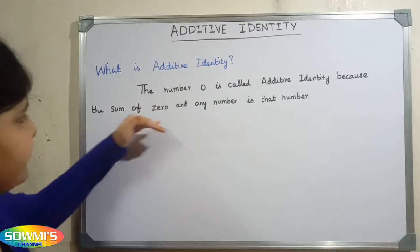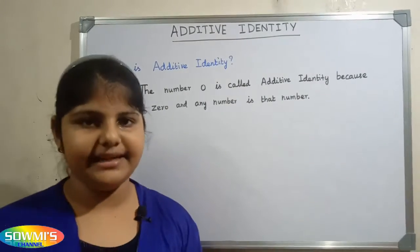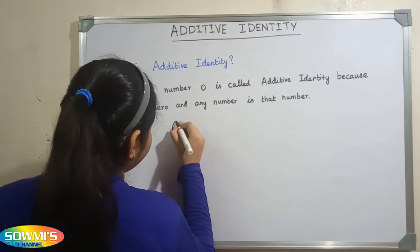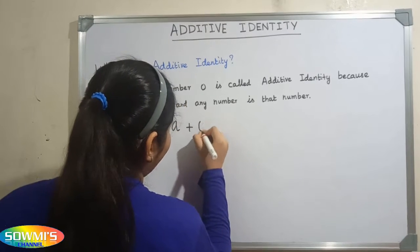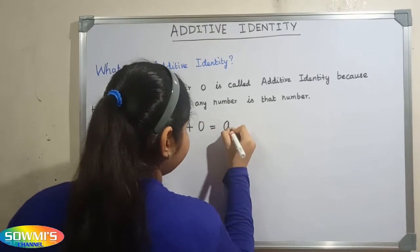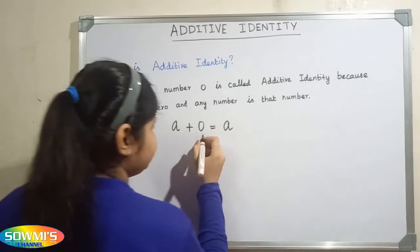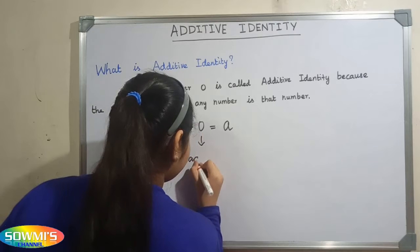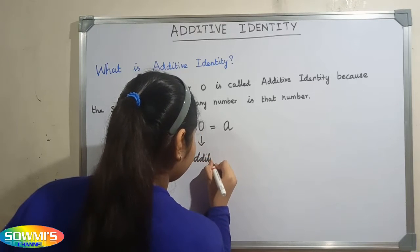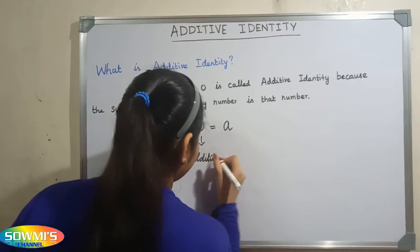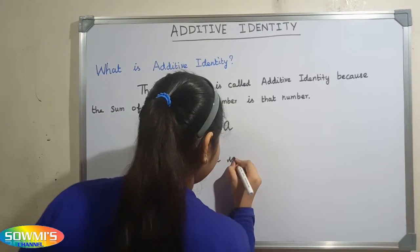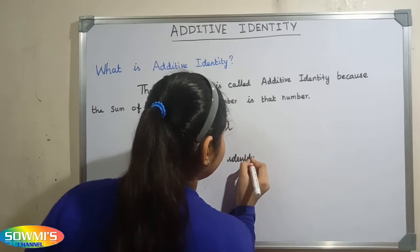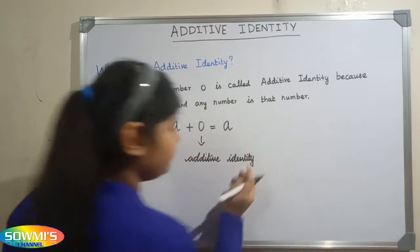Because the sum of zero and any number is that number. You can take a plus zero is equal to a. Here zero is the additive identity.